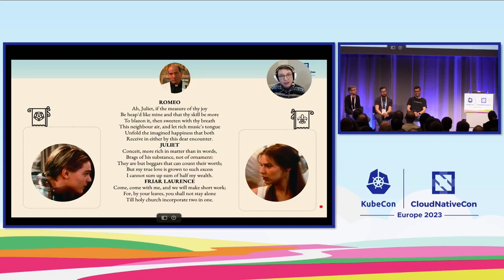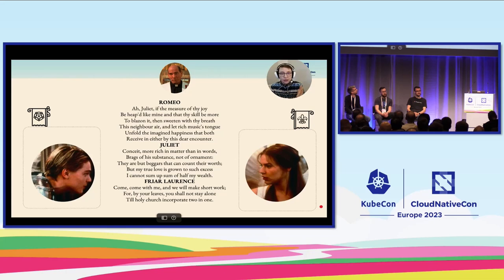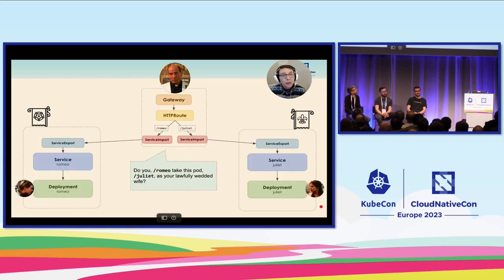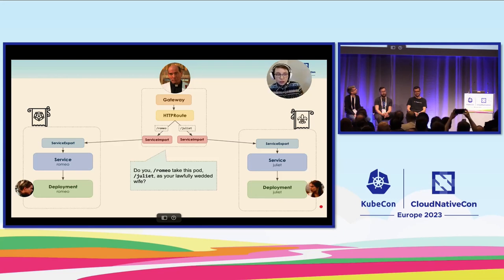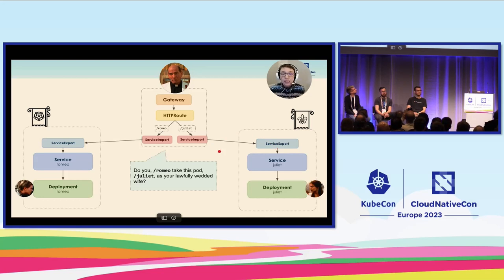In the story, it's not enough just to meet occasionally at a windowsill. Romeo and Juliet get a third party, Friar Lawrence, to marry them. To marry them, Friar Lawrence addresses each of them individually. We introduce a Gateway API resource here — Friar Lawrence as a client using an HTTPRoute from the Gateway API that splits traffic based on URI paths. Slash Romeo is backed by the ServiceImport matching the Romeo service, and slash Juliet is backed by the ServiceImport matching the Juliet service, so each service can respond even though they're in totally different clusters.